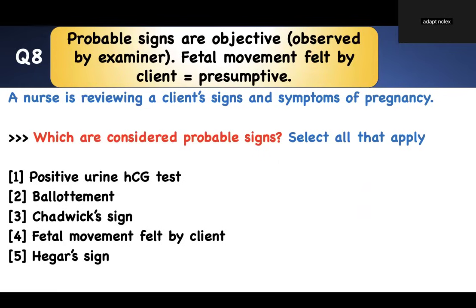Probable sign is objective — observed by the examiner. Fetal movement felt by the mother is presumptive. A positive pregnancy test — we did a test, so that's probable. Know the difference between positive, probable, and presumptive signs. This is a select-all-that-apply question. You don't have to pick everything. The correct answers are probable signs except number four — fetal movement felt by the client, which is presumptive.